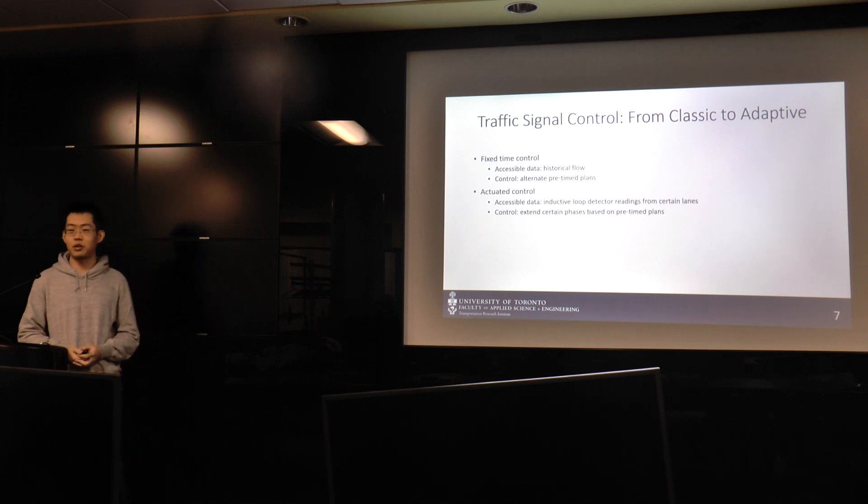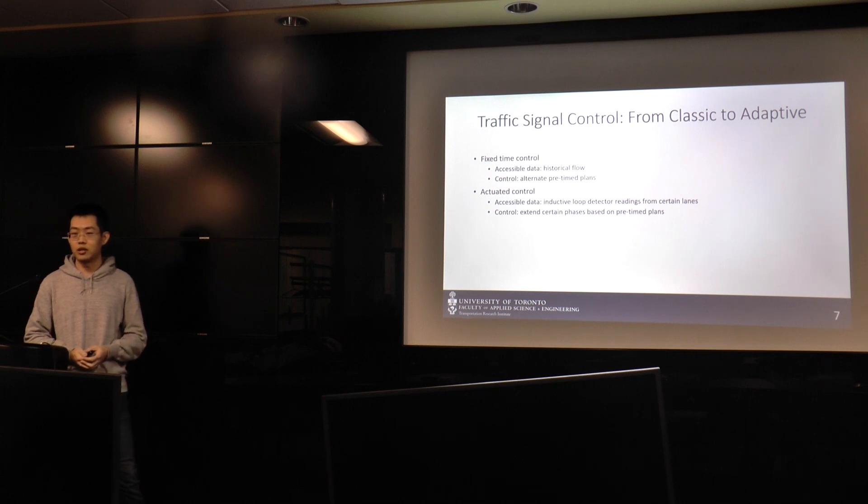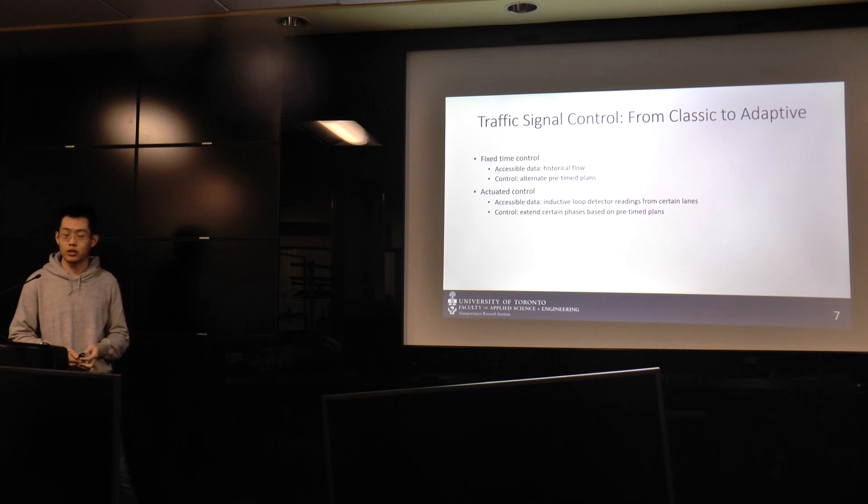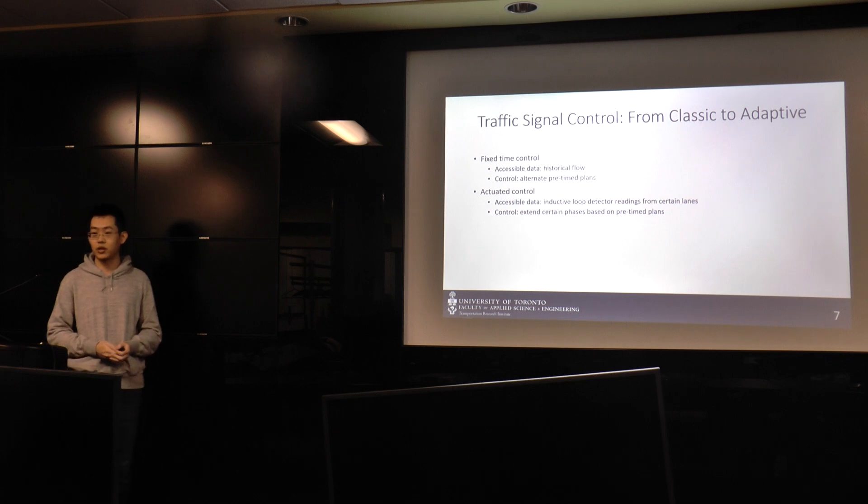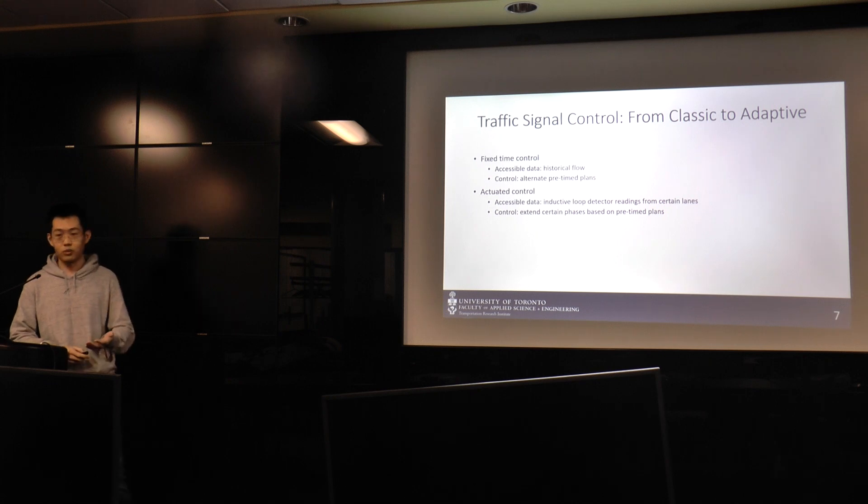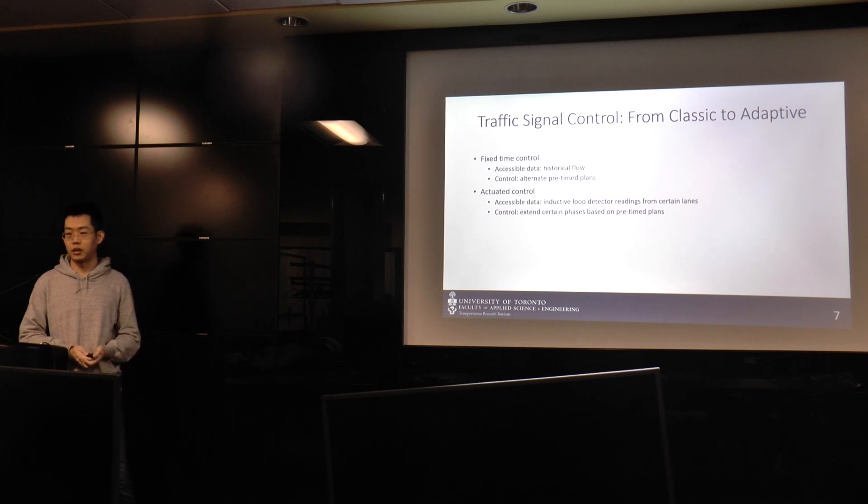Later on, we have something called actuated control. So beyond the fixed timing plan, now we have more sensors in the field. What we call the inductive loop detectors. It's installed under the pavement. It gives you a signal once a vehicle is holding above the loop. So now we know if there are vehicles from specific lanes. So we can extend certain phases, for example, left turn phases if there are enough amount of vehicles, or we can not extend them when there's no vehicle. So we get more flexibility in control.